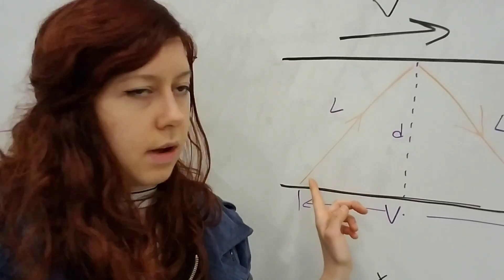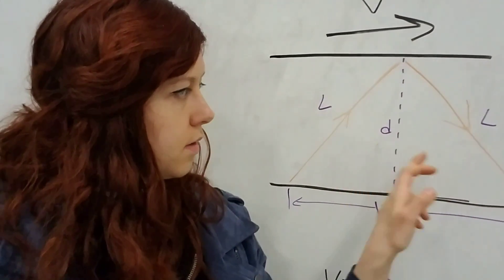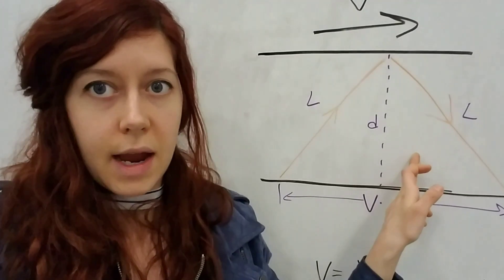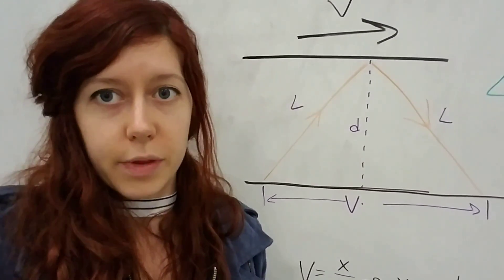That means that the light is traveling the hypotenuse of these two right triangles. So we can do a little bit of algebra and figure out that,